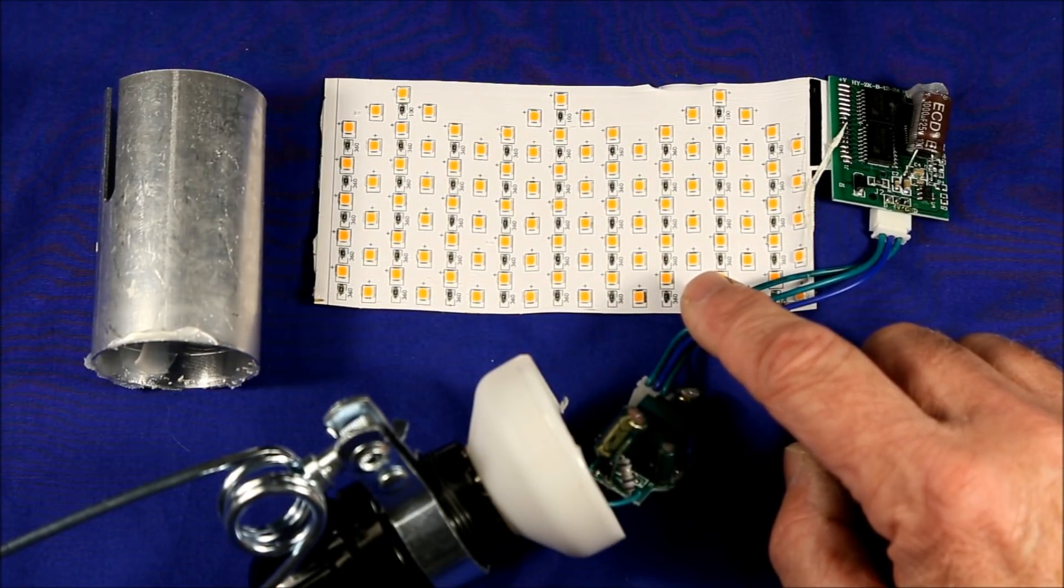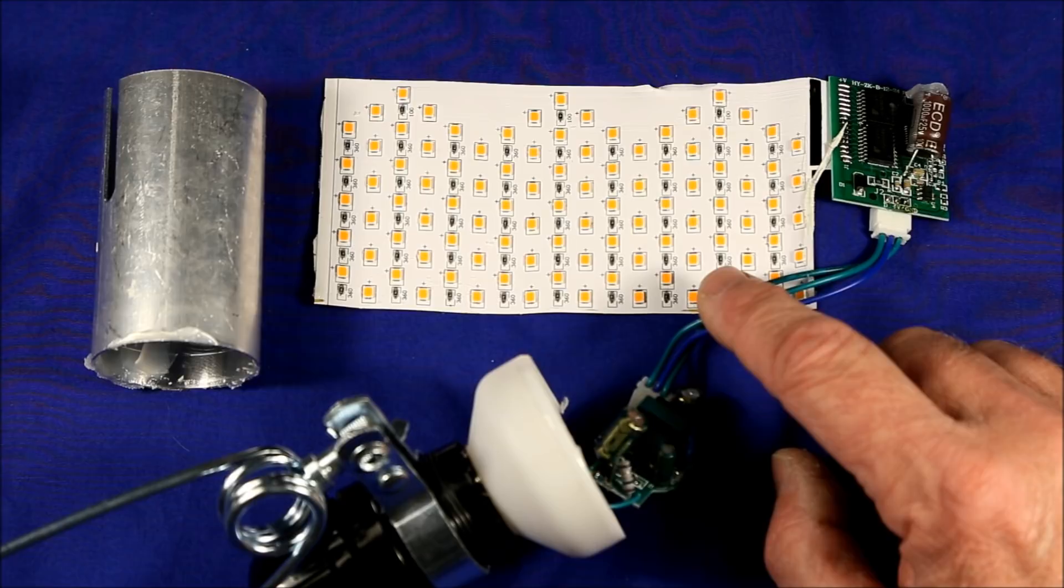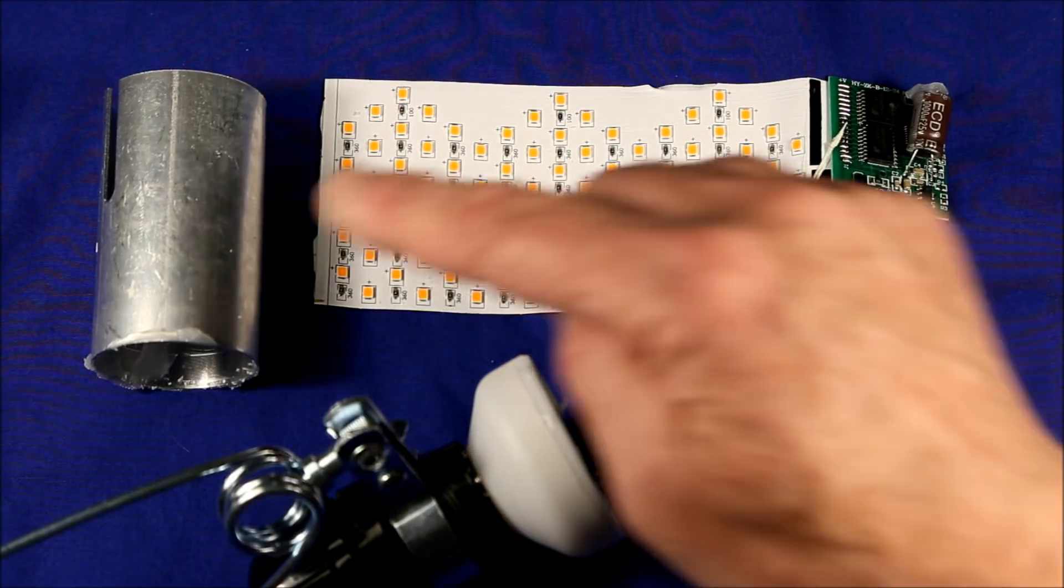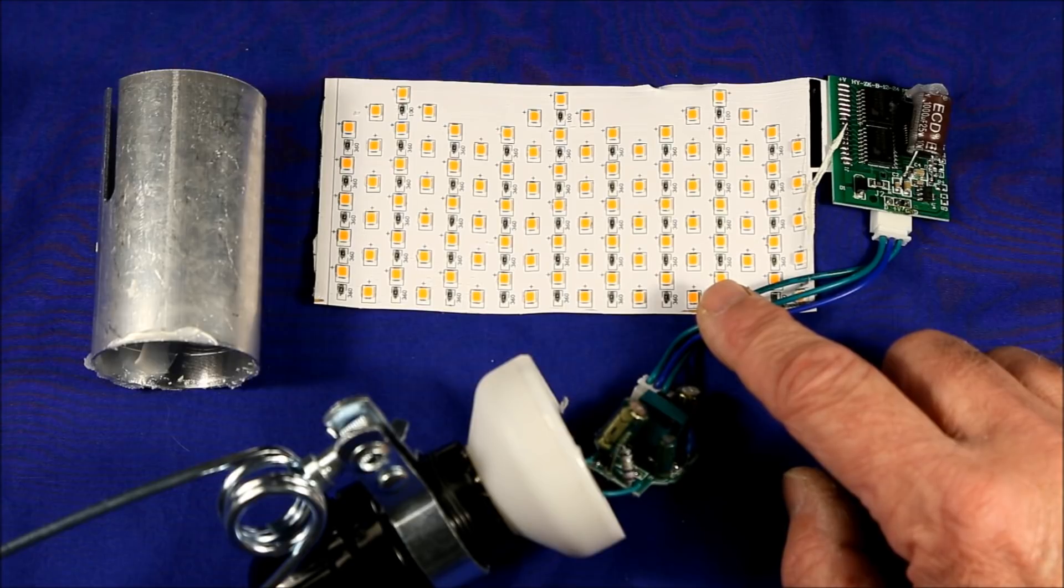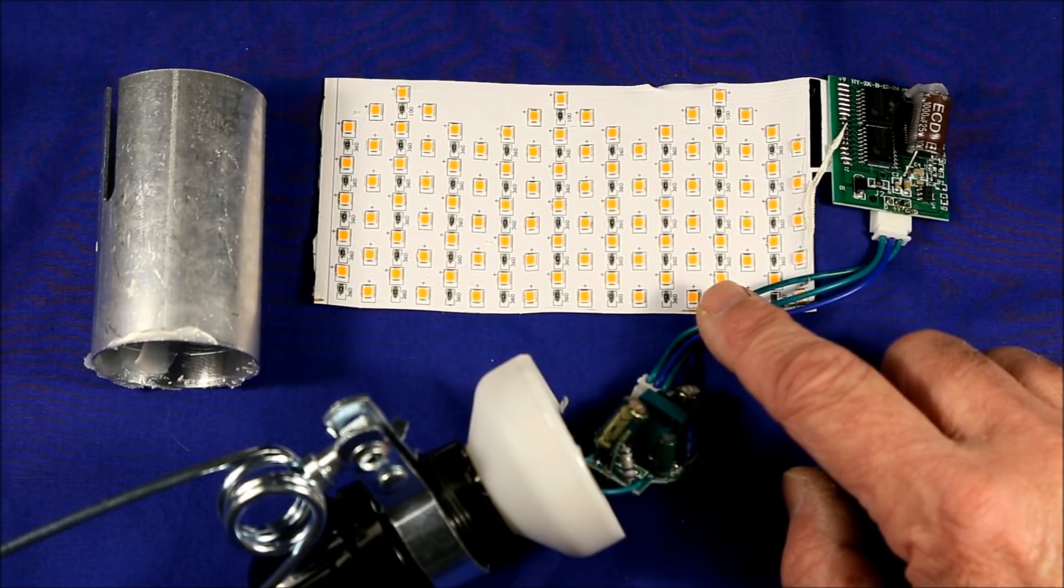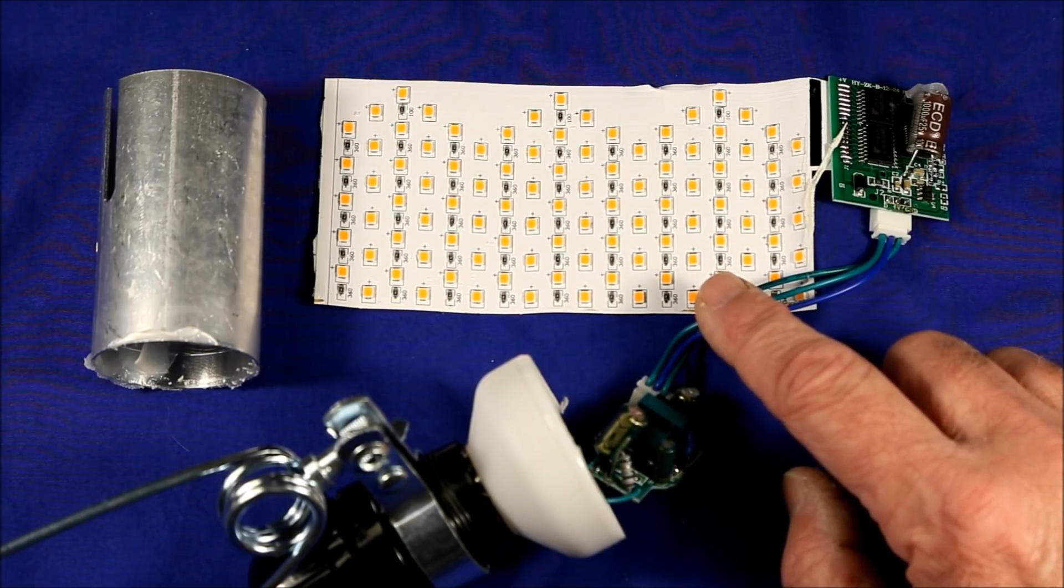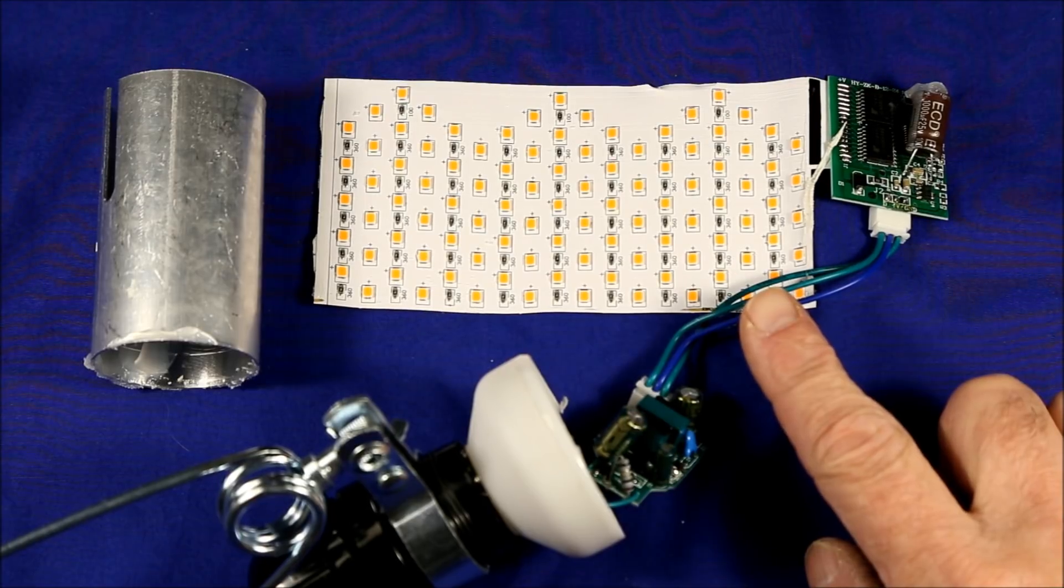Each of the LEDs is very efficient, but they still produce some heat, and it's in a very small area. By wrapping them around the aluminum cylinder and using thermally conductive tape, it spreads the heat out so no one LED gets too hot.